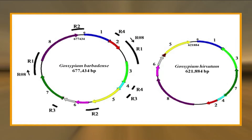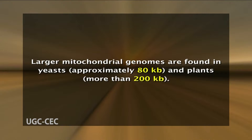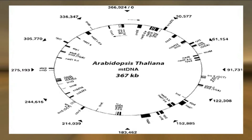Mitochondrial genomes vary considerably in size between different species. The genomes of human and most other animal mitochondria are only about 16 kilobases. But substantially larger mitochondrial genomes are found in yeast, approximately 80 kilobases, and in plants, more than 200 kilobases. However, these larger mitochondrial genomes are composed predominantly of non-coding sequences and do not appear to contain significantly more genetic information. For example, the largest sequenced mitochondrial genome is that of the plant Arabidopsis thaliana. Although Arabidopsis mitochondrial DNA is approximately 367 kilobases, it encodes only 31 proteins — just more than twice the number encoded by human mitochondrial DNA.